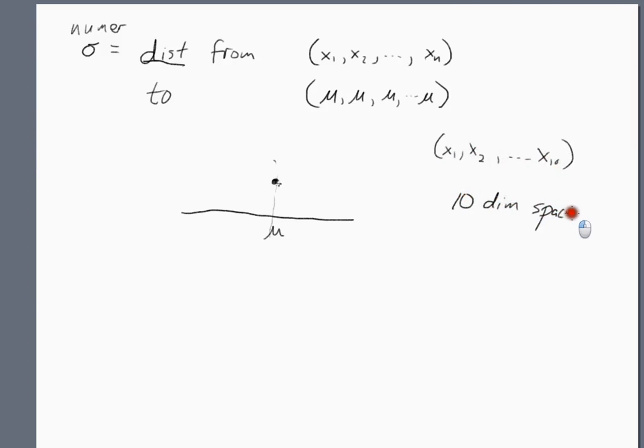I mean, if we had ten sample points, that would mean our standard deviation is the distance in ten dimensional space. Most people have a hard time visualizing what ten dimensional space looks like. But yeah, standard deviation is just distance in some high dimensional space.